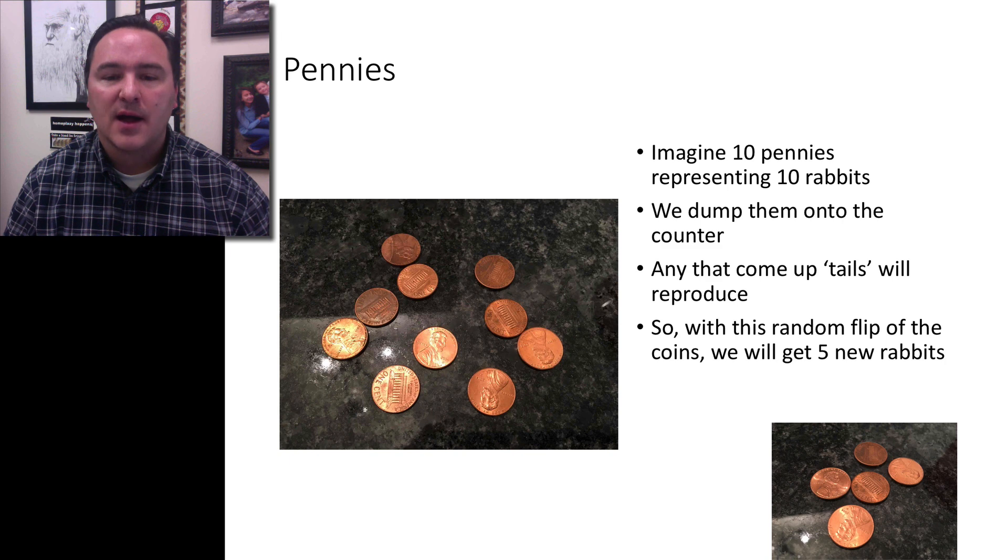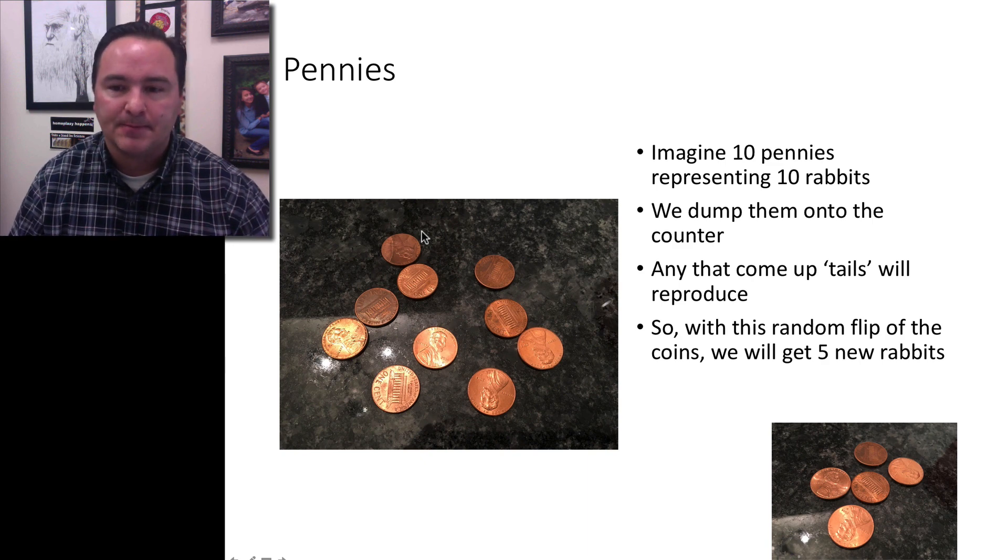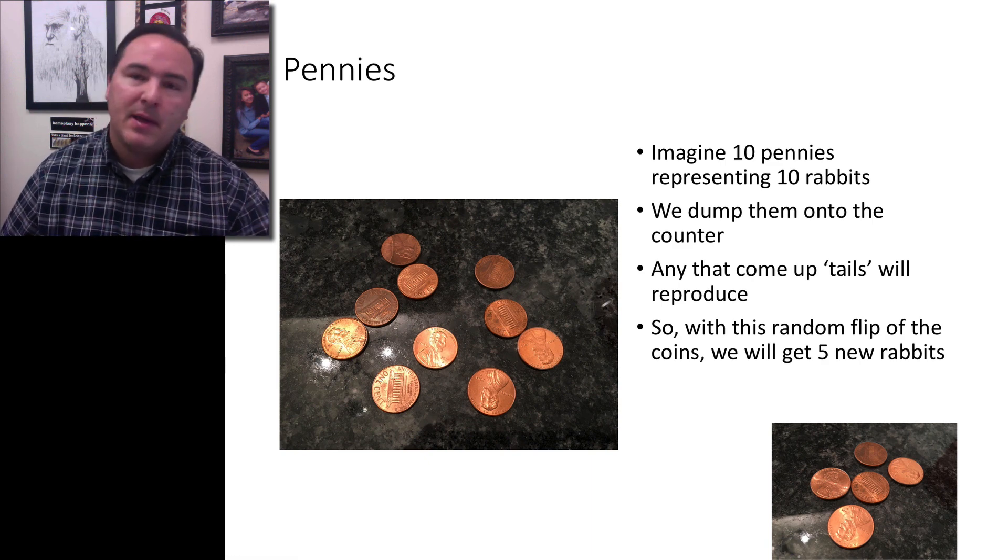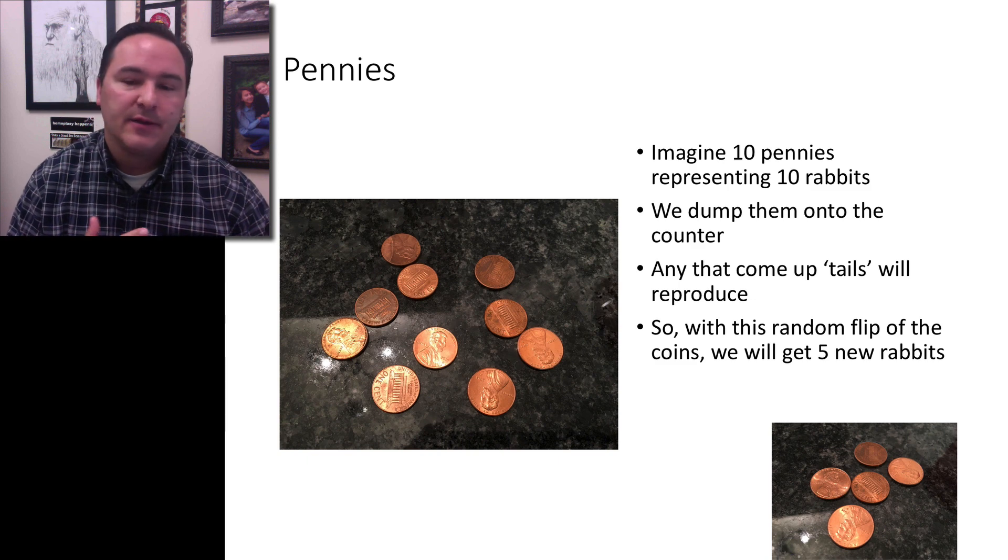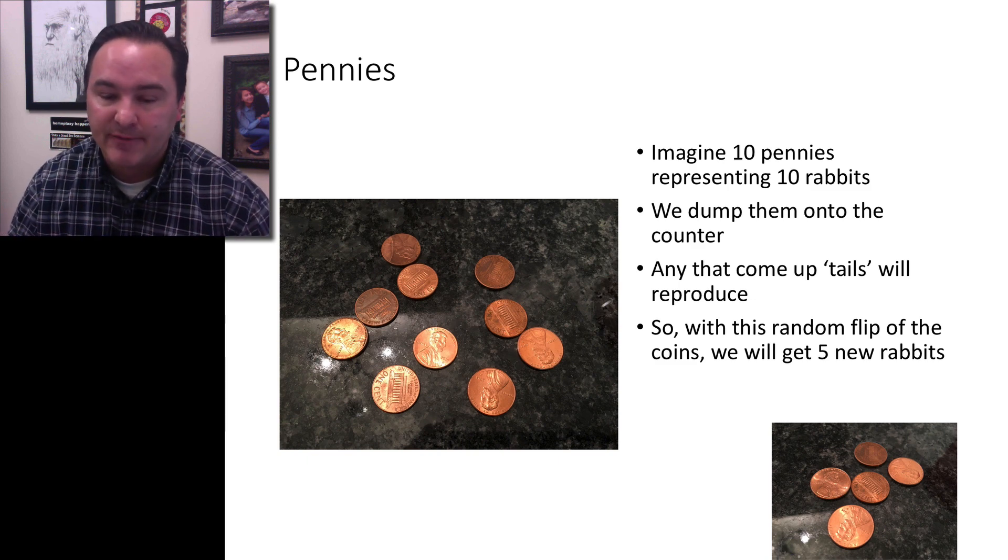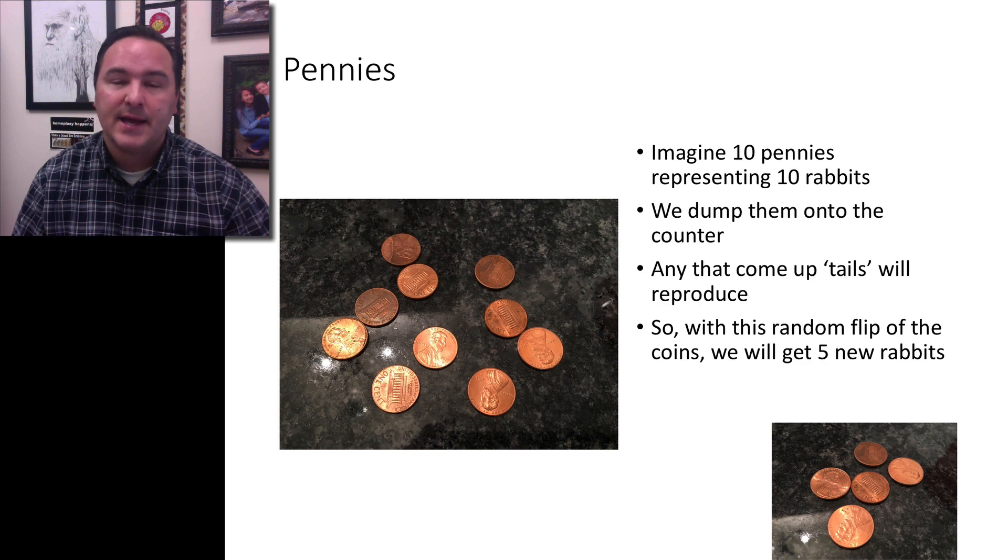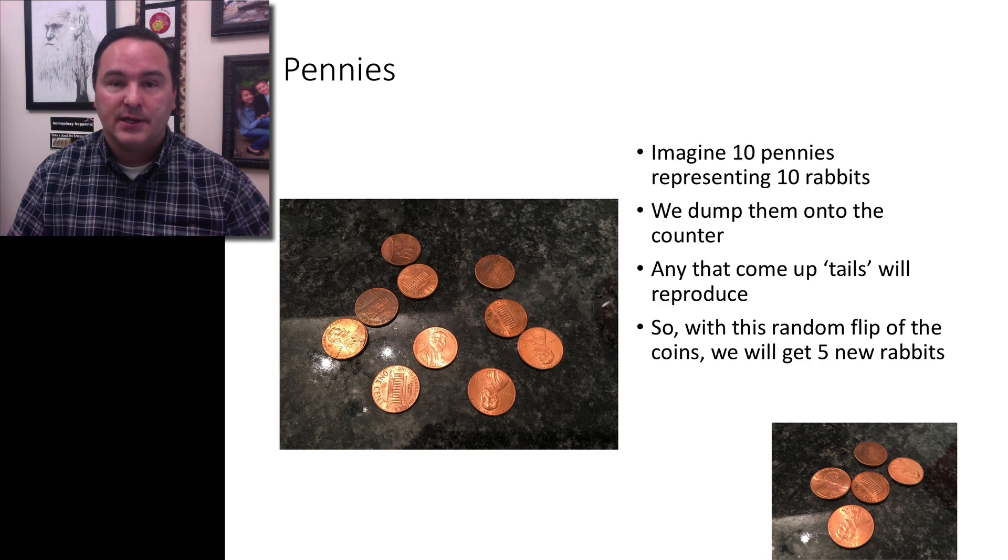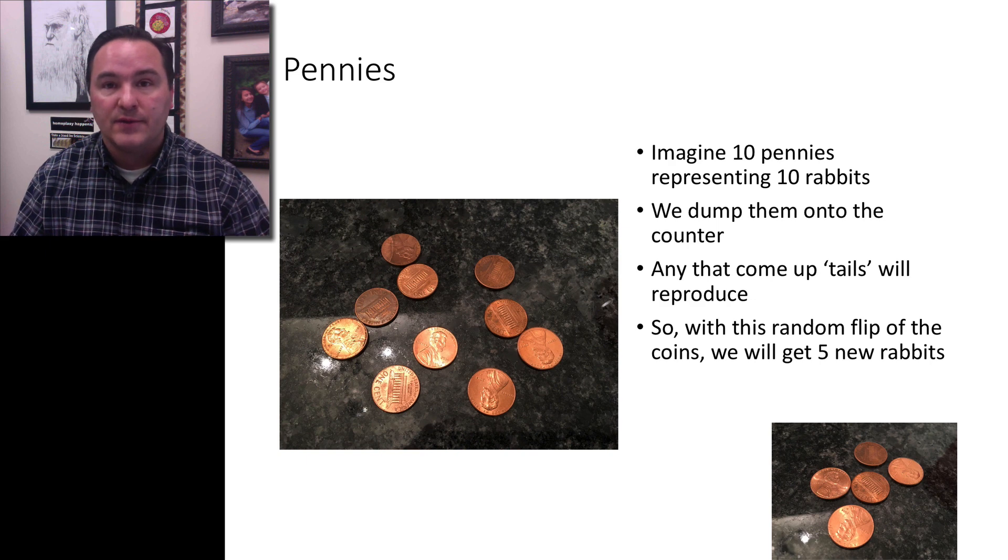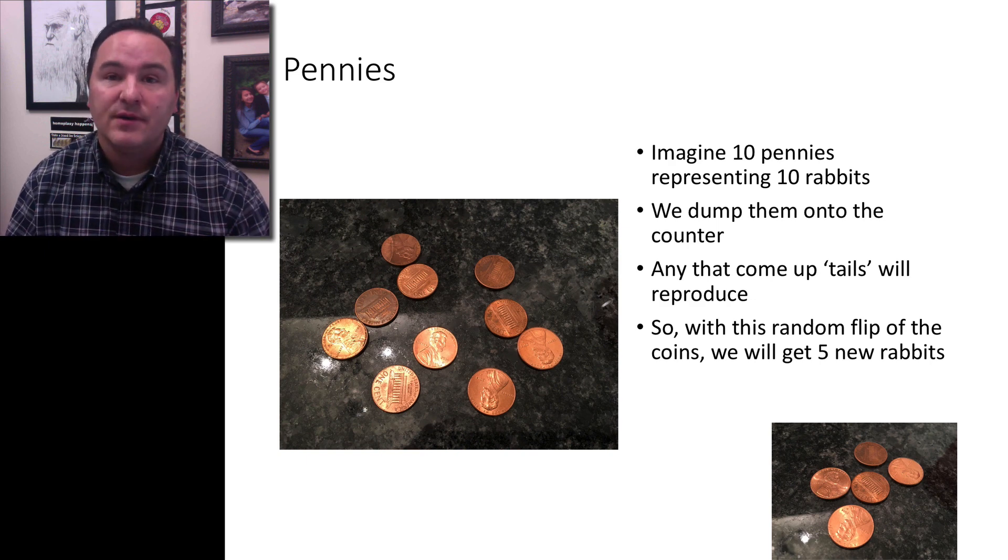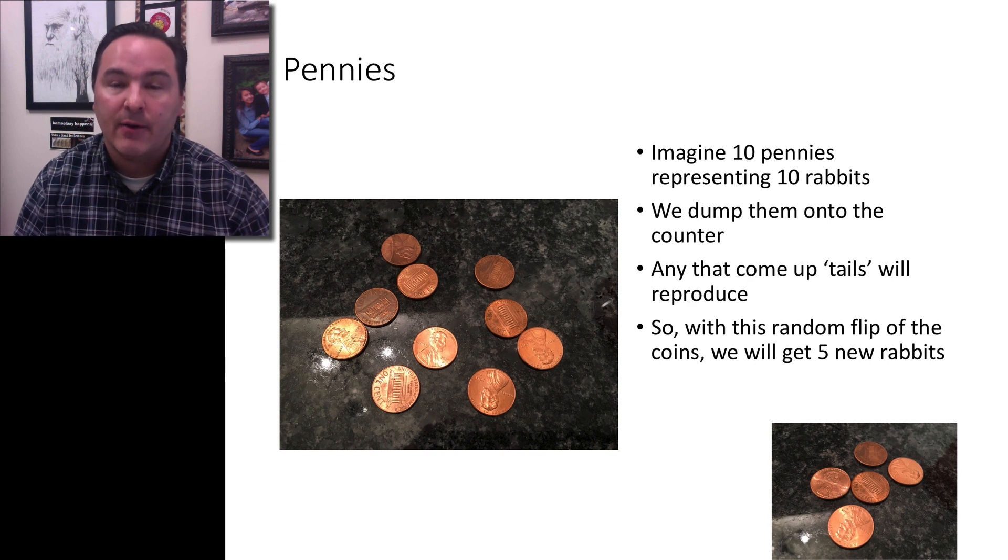To do this, let's simplify and talk about pennies for a moment. Imagine you have 10 pennies, and each penny represents a rabbit. Let's take those 10 pennies and assume anything that comes up tails will reproduce, anything that comes up heads will not survive. If we do this, about five should end up tails. So in addition to the 10 rabbits we already started with, five rabbits in the next generation survive and are added to that initial 10, so you end up with 15 rabbits.